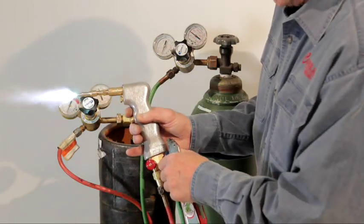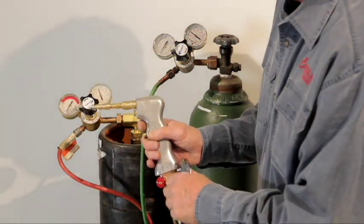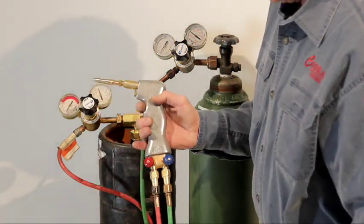Now we're ready to weld with it. Always cut the oxygen off first, then the acetylene. Now we're ready to weld with our COBRA torch.